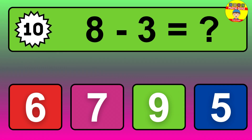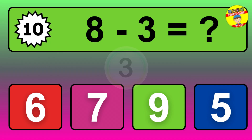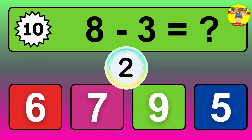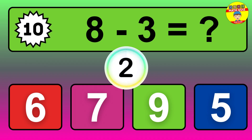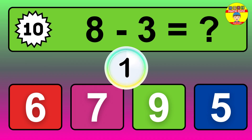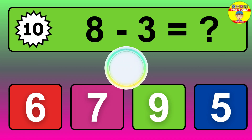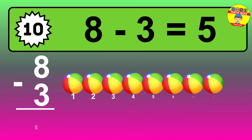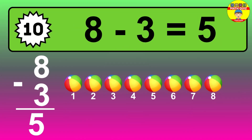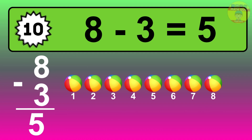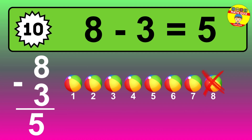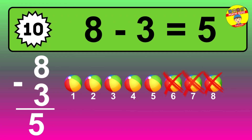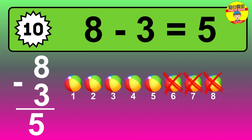Question 10. 8 minus 3 equals what? The answer is 8 minus 3 is 5. Let's count it: 1, 2, 3, 4, 5.